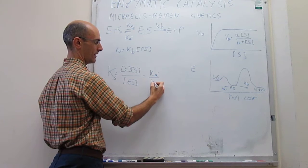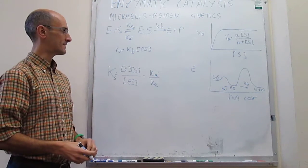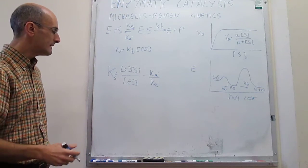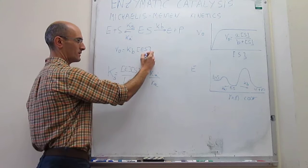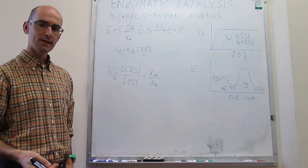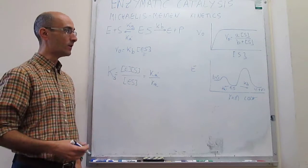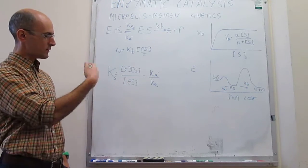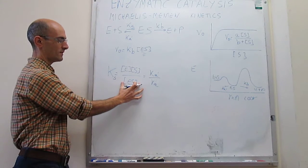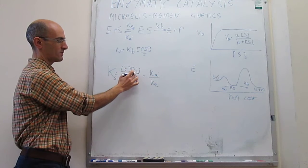Inverting everything gives a different nomenclature. This is K_S, the dissociation constant of the complex, where the products are the concentration of E times concentration of S, and the reagent is ES. The ratio of rate constants also inverts to K_a' over K_a. Our goal is to find an expression for the concentration of ES that does not depend on the intermediate, but instead depends only on the concentration of substrate.